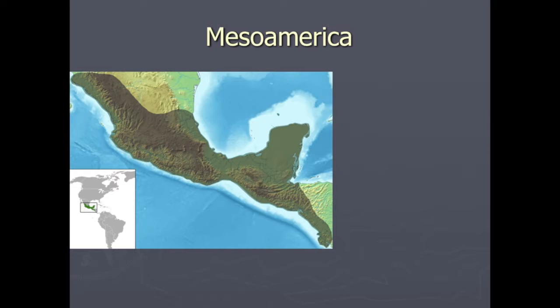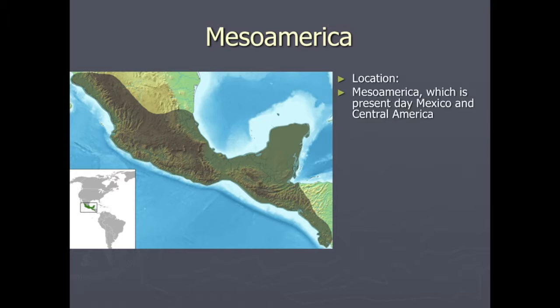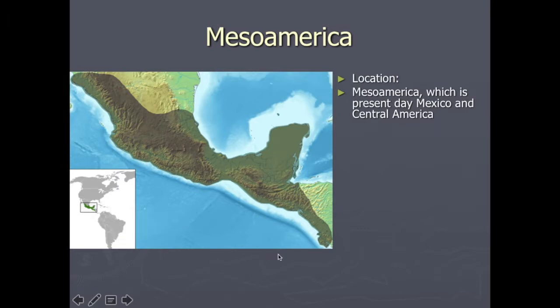One particular area of the new world I'll talk about first is known as Mesoamerica. Under the word 'location' in your notes, you should write that this is basically present-day Mexico, Central America, and a little bit of northern South America — you can see it in the inset map. This area of the Americas is known for having a very steady climate, which is crucial: if you have a climate that is warm and stable, you don't have to chase herds around as a food source.